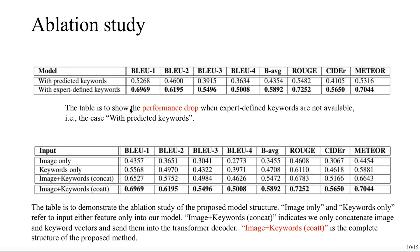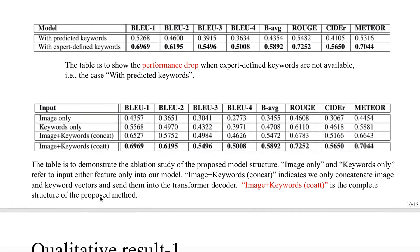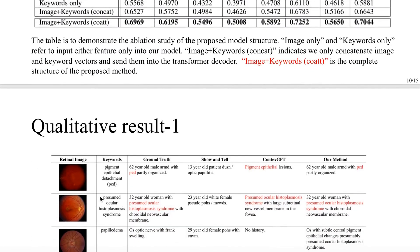However, in these two cases, the performance is still better than the baseline models. We also do some ablation study. You can see that the image-based keyword feature, especially with the co-attention mechanism, has the best performance compared to the other two baselines.